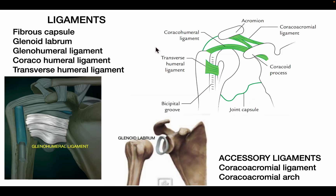Ligaments of the shoulder joint include the fibrous capsule, glenoid labrum, glenohumeral ligament, coracohumeral ligament, transverse humeral ligament, and accessory ligaments — specifically the coracoacromial ligament — which forms an arch known as the coracoacromial arch.